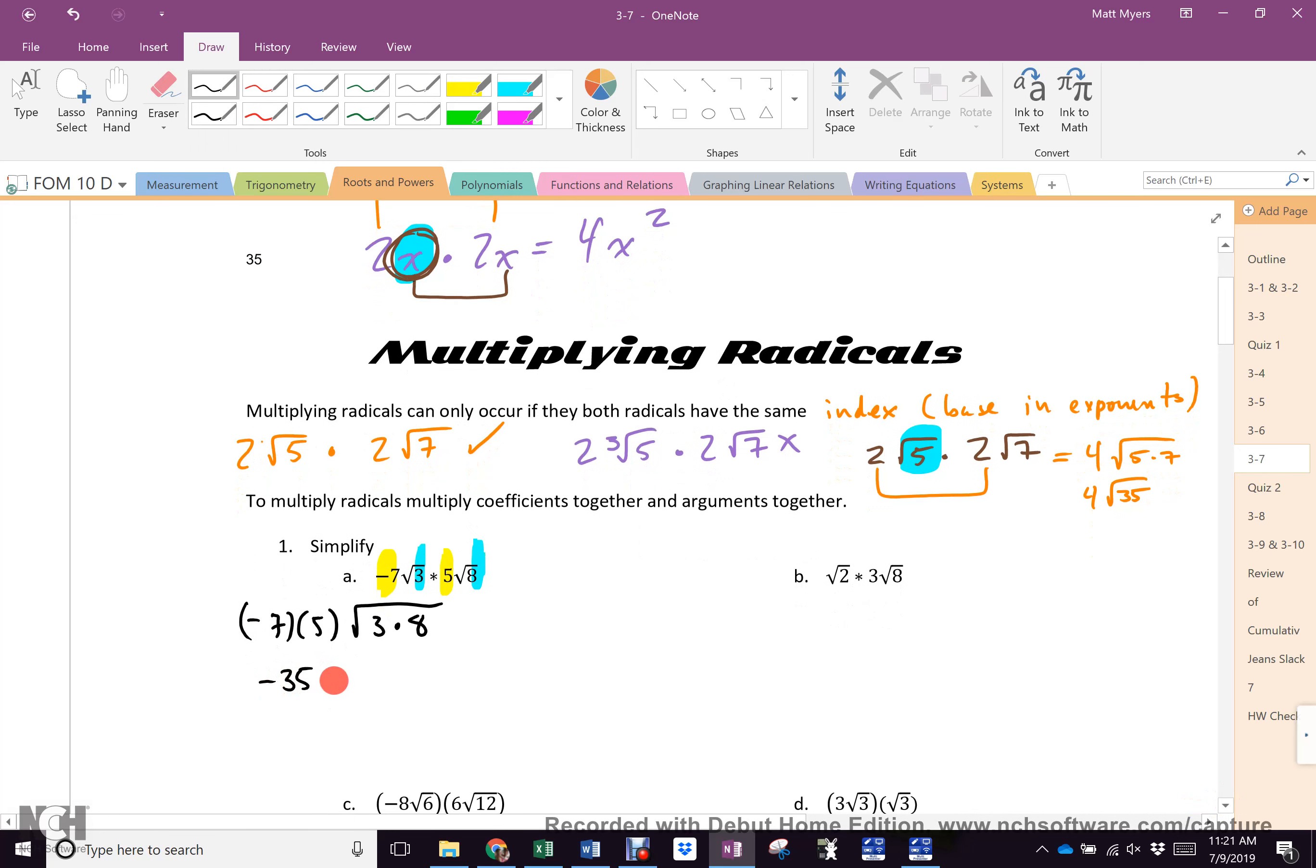Negative 7 times 5 root 3 times 8. Now, we simplify. Negative 35 root. Now, 3 and 8. Well, that's 3 times 2 times 4. Right? Well, what is 4? Does it have a square root? So, what comes out? The 4? 2 comes out. Once 2 is out here, what do these guys do? Multiply.